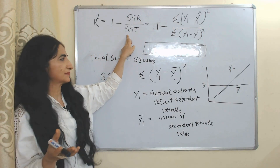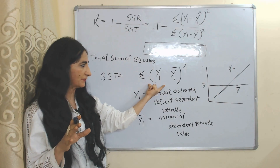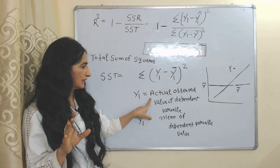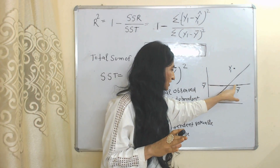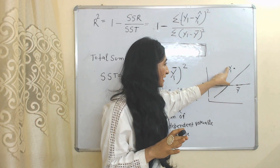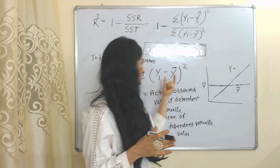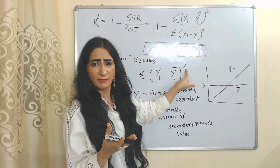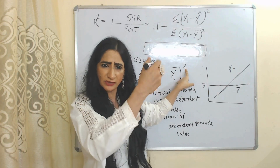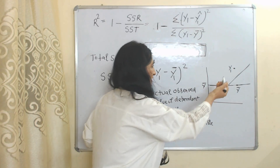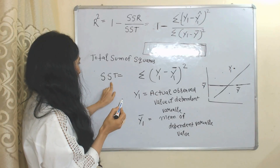Now we will see what SST is. SST is the total sum of squares. The formula to calculate SST uses Y1, the actual observed value of the dependent variable, and Y1-bar, the mean of the dependent variable. This horizontal line represents the mean of the dependent variable, and the difference between an actual observed value and the mean is a type of error. We square it to avoid positive and negative values, and we take the summation because we have so many errors.